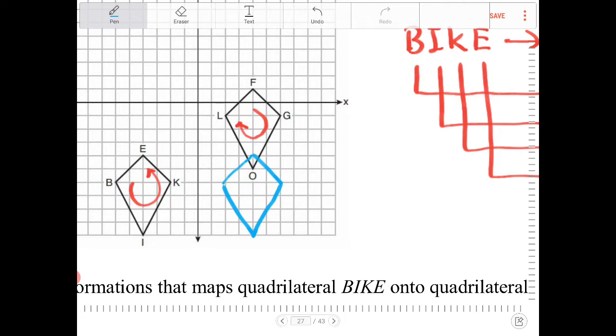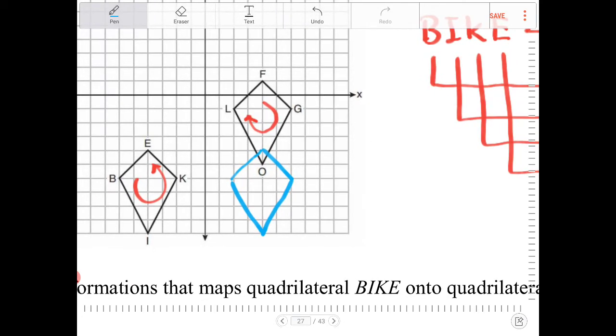It's deceiving, because this quadrilateral is a kite, and a kite has one line of symmetry.